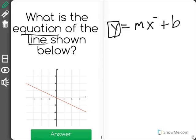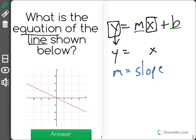Just know that y and x will automatically stay in the equation. We need to find out what m is - m is the slope - and we also need to determine what b is, which is the y-intercept.